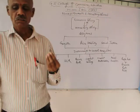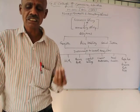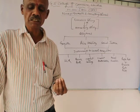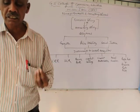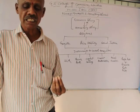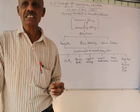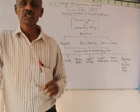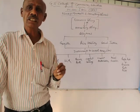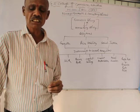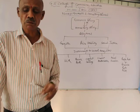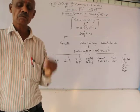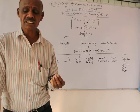The next one is credit ceiling. In this operation, RBI issues prior information or direction that loans to the commercial banks will be given up to a certain limit. In this case, commercial banks will be tight enough in advancing loans to the public; they will allocate loans to limited or needy sectors only and unnecessary loans are cut out. The next one is the credit authorization scheme, which was introduced in November 1965 when PC Bhattacharya was the chairman of the Reserve Bank of India. Under this instrument of credit regulation, RBI, as per the guidelines, authorizes the banks to advance loans for the desired sections of the loan demand.